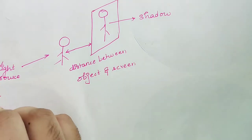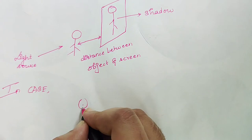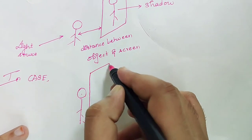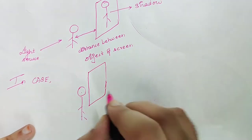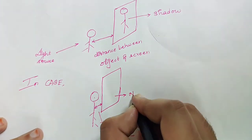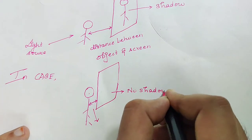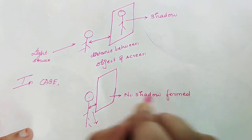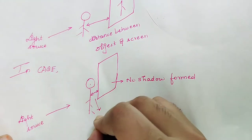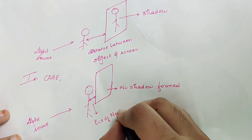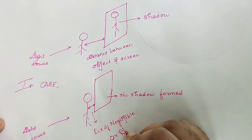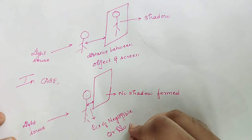This is very important to understand. In case the object and the screen are very close to each other, with no distance or negligible distance between them, when we illuminate a light source, there will be no shadow formed — just because there is no distance or negligible distance between the object and the screen. So, the main concept for the formation of shadow is the distance between the object and the screen.